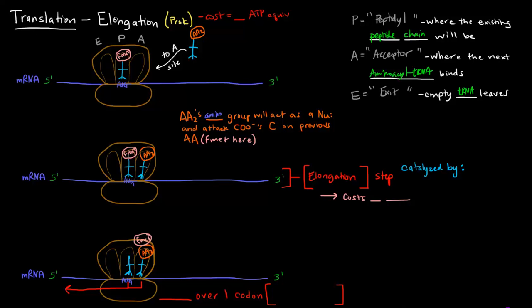In this case, the previous amino acid is the formyl-methionine initially on the P site. The amino group of amino acid number two attacks the formyl-methionine, causing them to covalently bond. This elongation step is catalyzed by peptidyl transferase and costs one GTP.